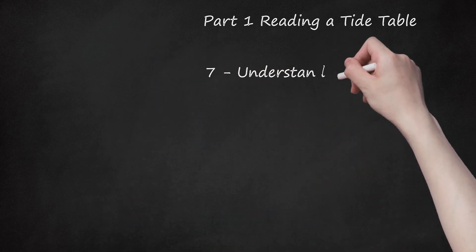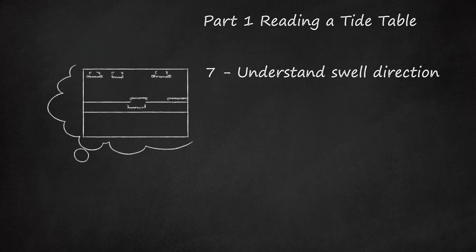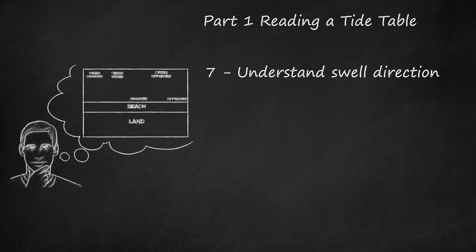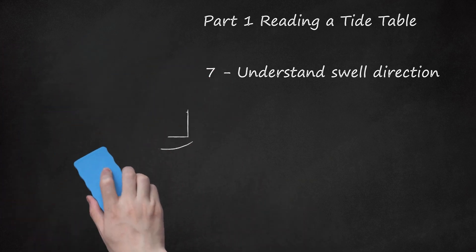Step 7: Understand Swell Direction. This information, often indicated by a letter, tells you from what direction the waves will be coming. For instance, the letter W tells you that the waves will be coming from due west. This information is particularly important for surfers. If the beach faces north but the waves are coming from the northwest, the waves will break differently as they hit the beach or point break.